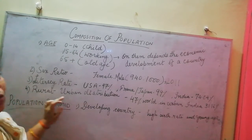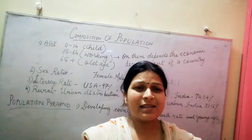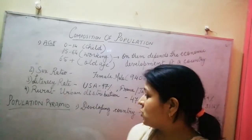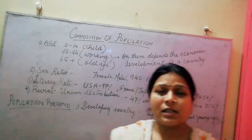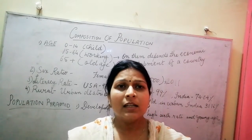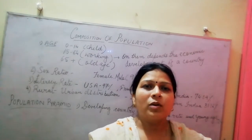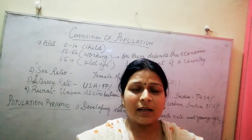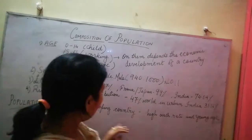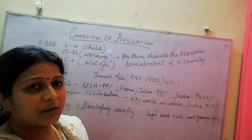Next is rural and urban distribution. Rural means village areas and urban means city areas. About 47 percent of the world population lives in urban areas. In India, only 31 percent of the population resides in urban areas, while about 68 percent live in rural areas. These factors describe the composition of population and economic development depends on them.